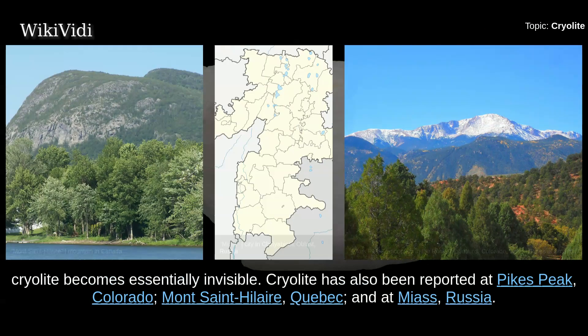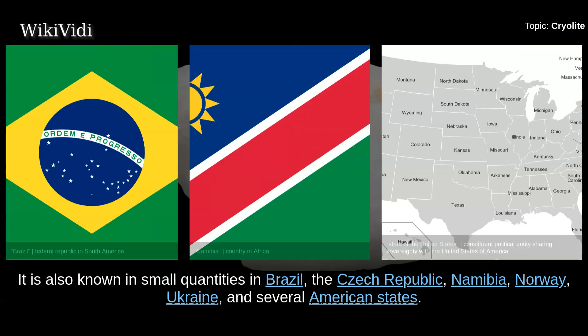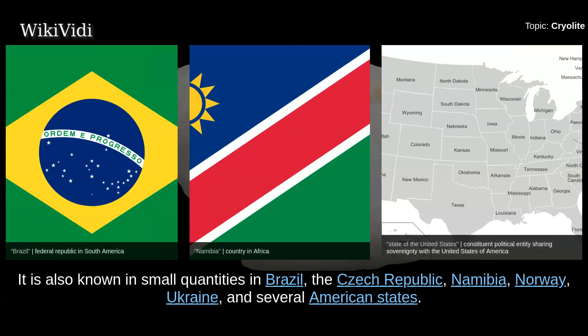Due to its refractive index being very close to that of water, if immersed in water, cryolite becomes essentially invisible. Cryolite has also been reported at Pikes Peak, Colorado, Montana, Saint-Hilaire, Quebec, and at Miass, Russia. It is also known in small quantities in Brazil, the Czech Republic, Namibia, Norway, Ukraine, and several American states.